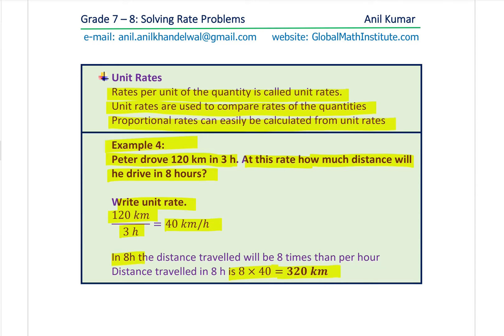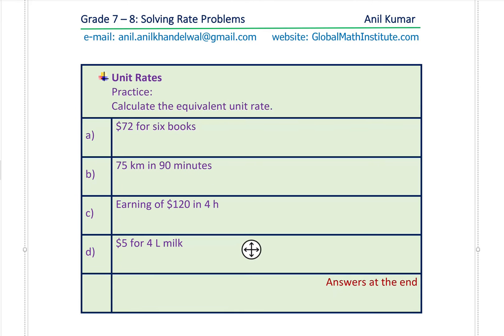That is how we can solve questions based on rates — first find the unit rate, then find what is required. Here we have practice questions: find the unit rates for all 4 cases. Pause the video, find the unit rates, and check with the answers at the end. The questions are: $72 for 6 books — cost per book; 75 kilometers in 90 minutes — you may want to convert to hours.